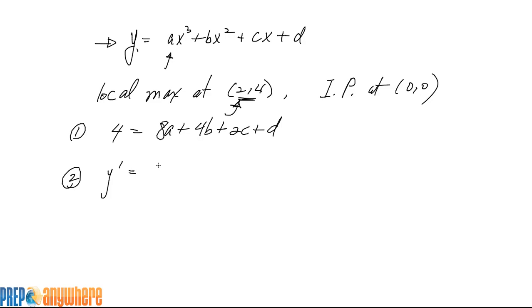So y prime is 3ax squared plus 2bx plus c. And in there, if you replace the x with 2, so 4 times 3 is 12, 2 times 2 is going to be 4. This is going to be 0.